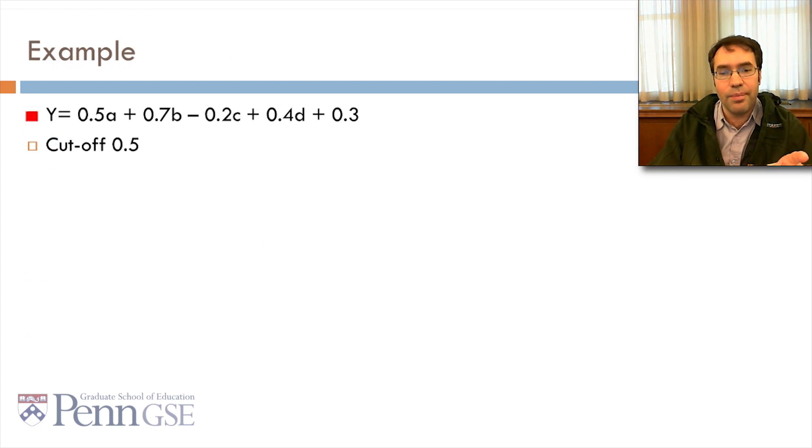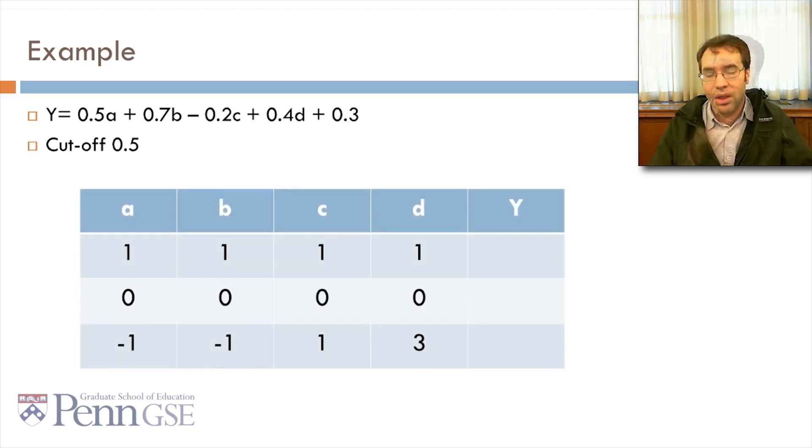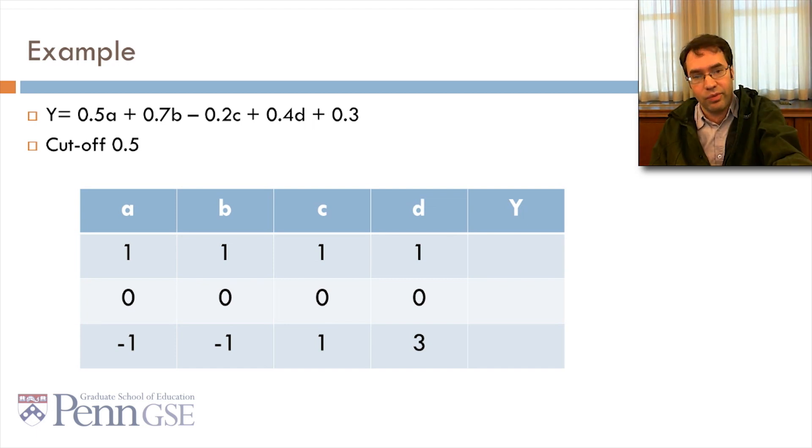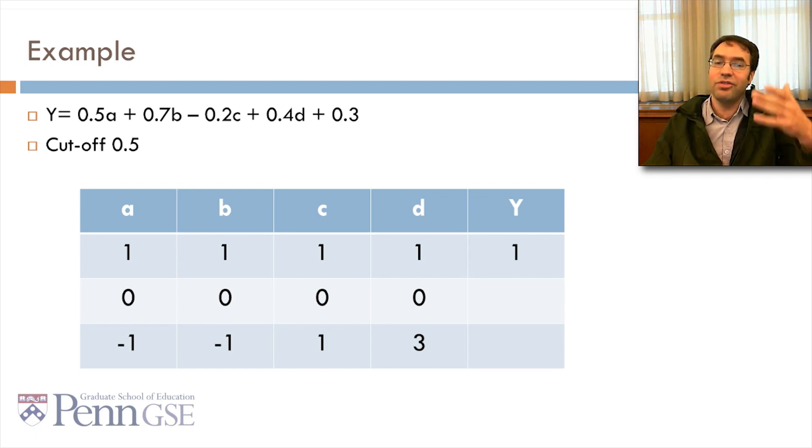Let's give an example. Let's say y equals 0.5a plus 0.7b minus 0.2c plus 0.4d plus 0.3, and our cutoff is 0.5. That's the most common cutoff. So, let's say the values of a, b, c, and d are 1. Well, in that case, 0.5 times 1 is 0.5, plus 0.7, minus 0.2, plus 0.4, plus 0.3, is that greater or less than 0.5? Well, it's 1.7, so it's greater than 0.5, so it's 1.